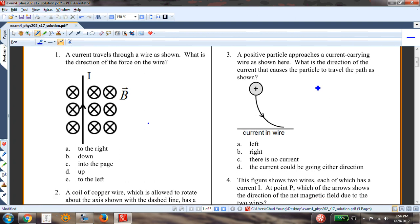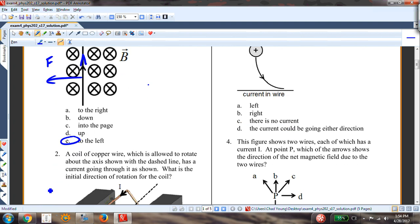The current travels through the wire as shown. What is the direction of the force on the wire? Let your index finger go in the direction of I. They fold towards, or your middle finger goes towards B, and that gives you the force to the left.